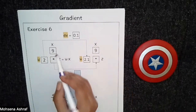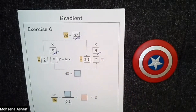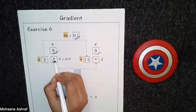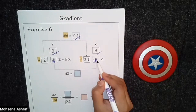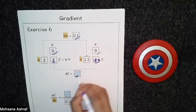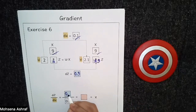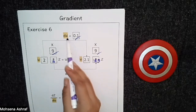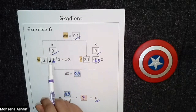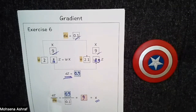Next exercise, again we have the value of x, and we know dw, so we have to find out dz. So 9 × 2 = 18 and 9 × 2.1 = 18.9. So dz = 0.9. And if we put the value of dz, so 0.9 divided by 0.1 gives us 9, which is the value of x. Again, we can see that if we have the values of dw and x, we can simply calculate dz.